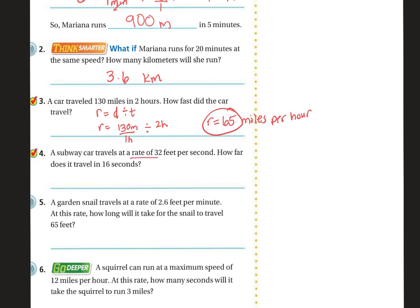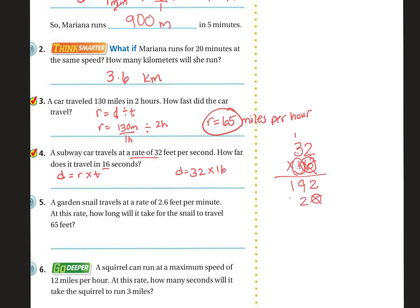A subway car travels at a rate of 32 feet per second. How far does it travel in 16 seconds? We have the rate and the time, so use the formula D equals rate times time. D equals 32 times 16. Starting with the ones: 6 times 2 is 12, carry the 1; 6 times 3 is 18 plus 1 is 19. Then the tens: 1 times 2 is 2, 1 times 3 is 3. Adding together gives 512 feet.